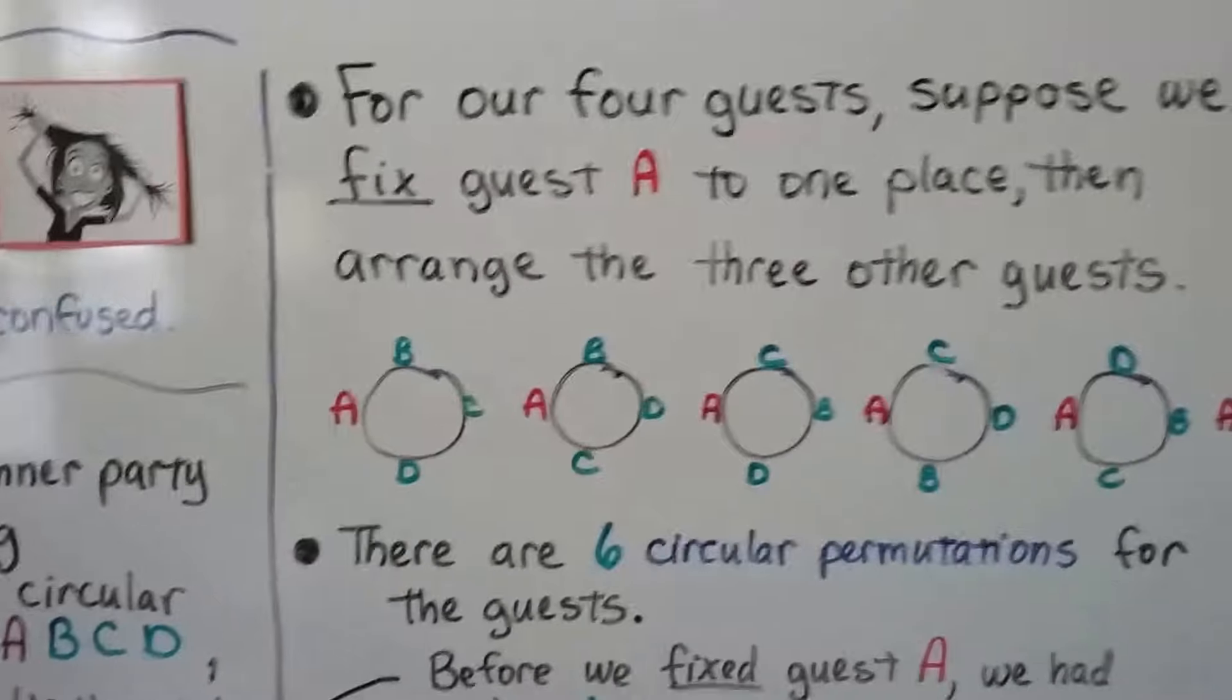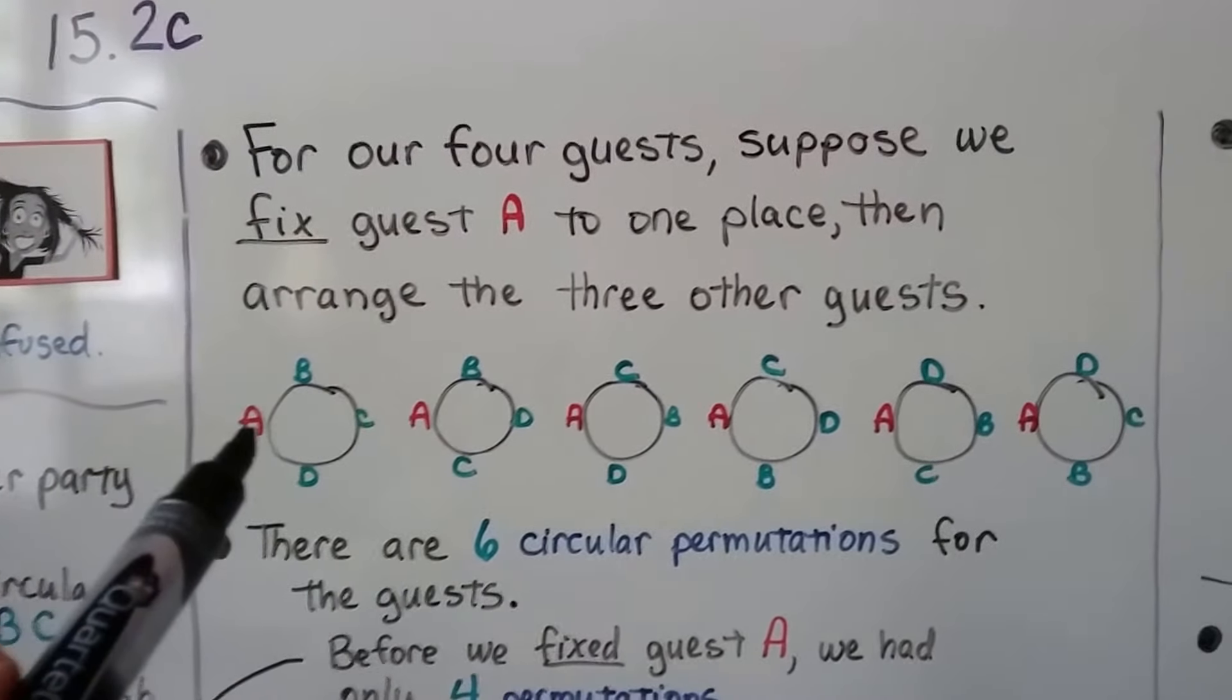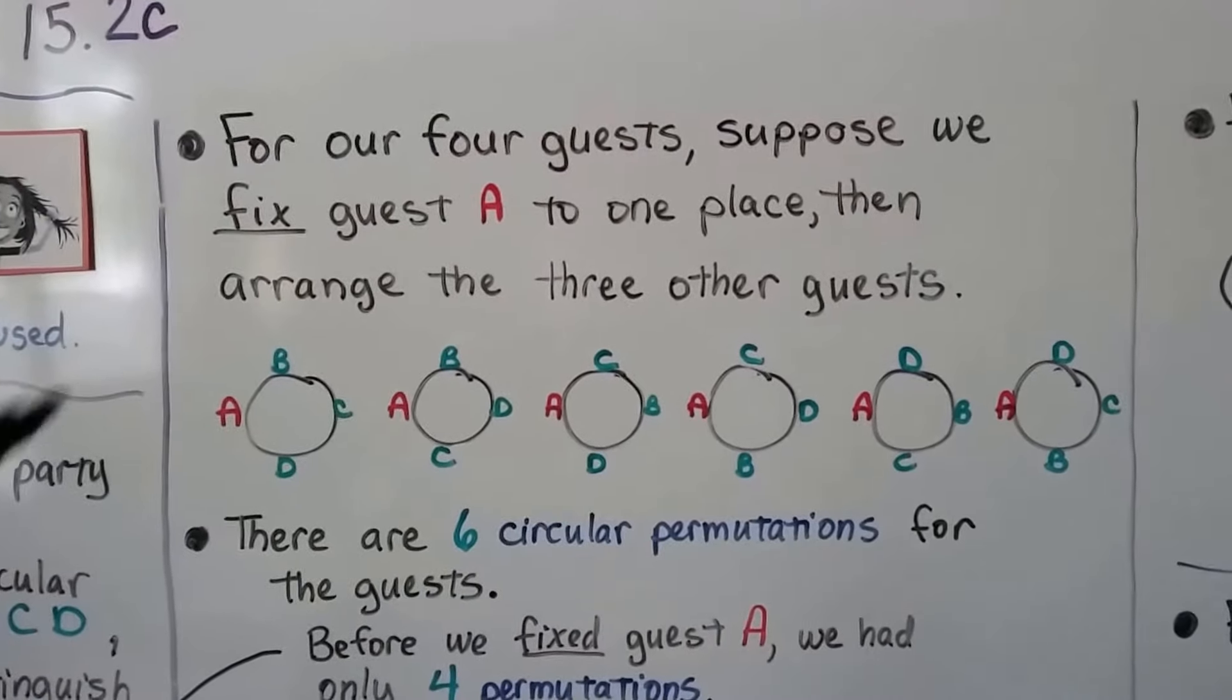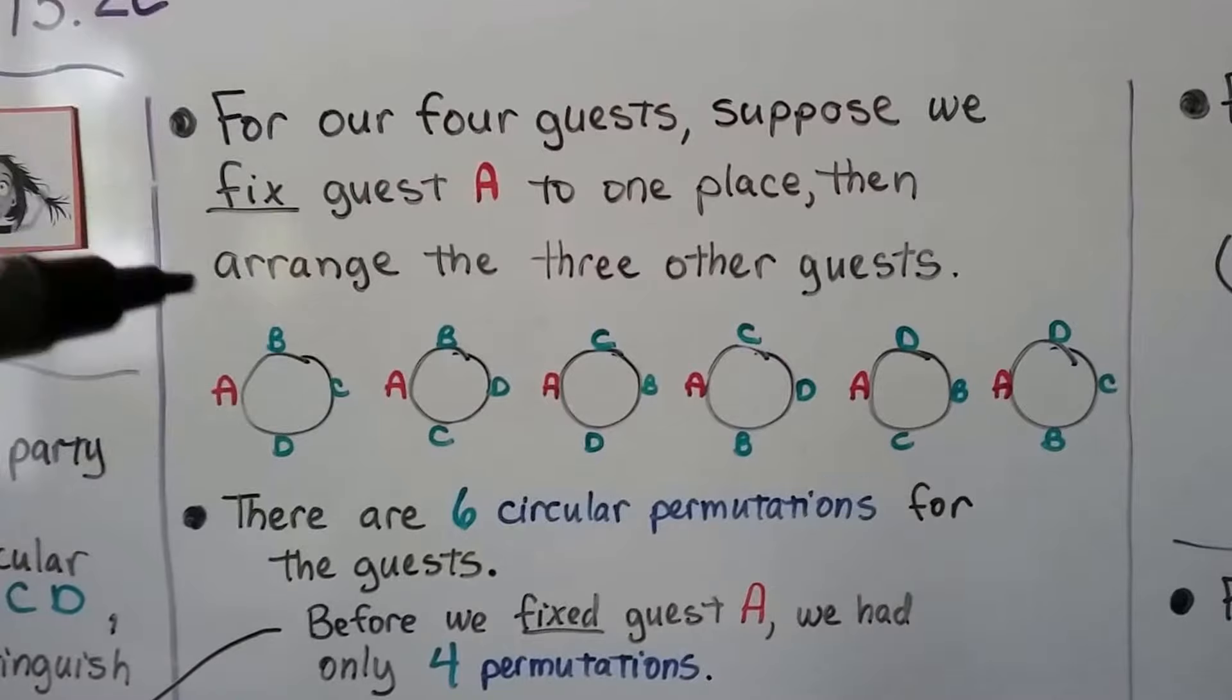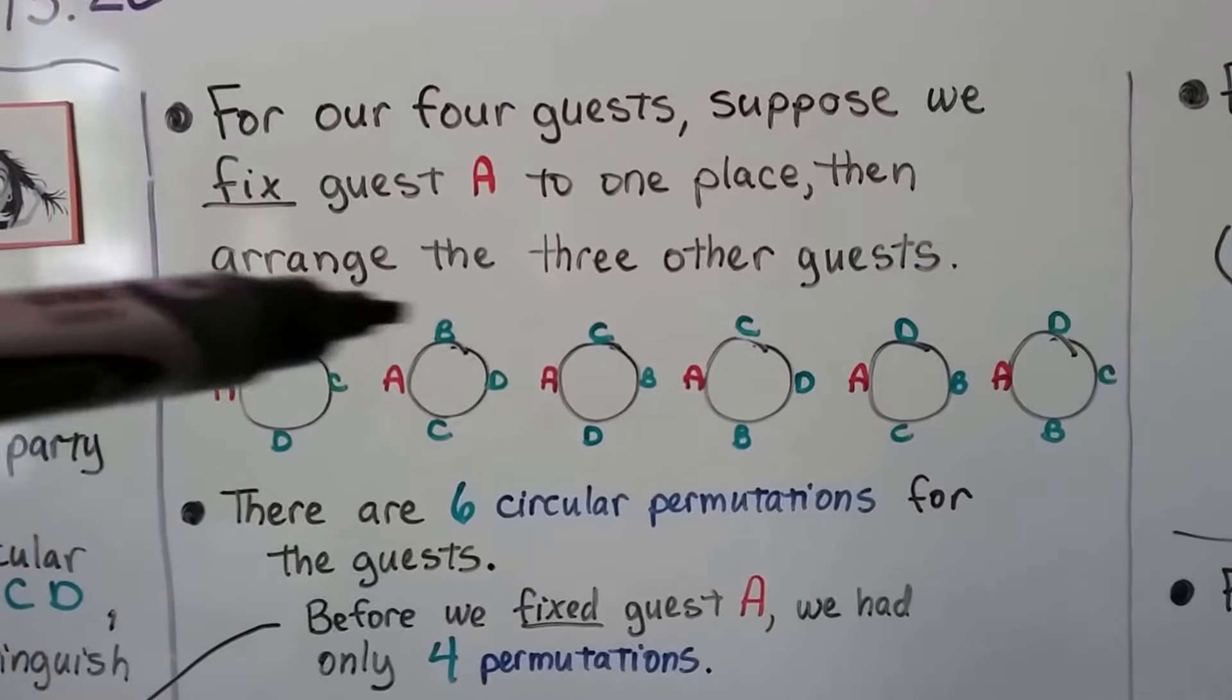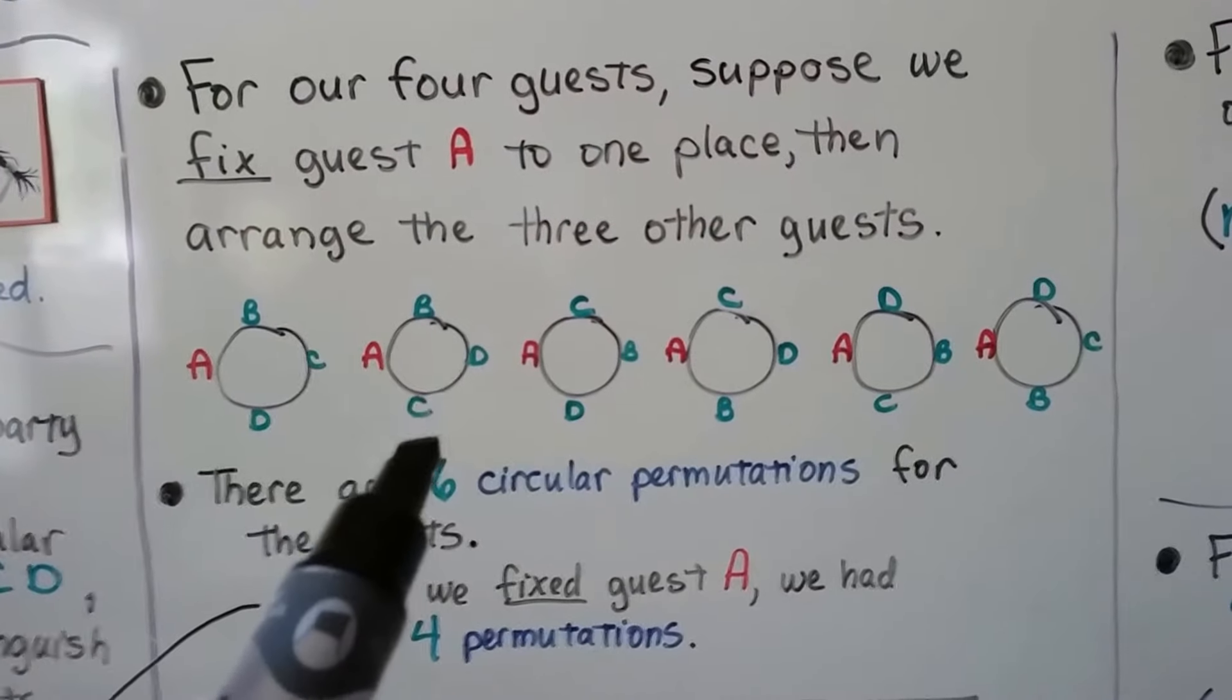For our four guests, suppose we fix guest A into one place, then arrange the other three guests. So here we have A always on the left, and we're going to change B, C, and D. Here B is on the top, and then we have C, D, and we change it to B, D, C.